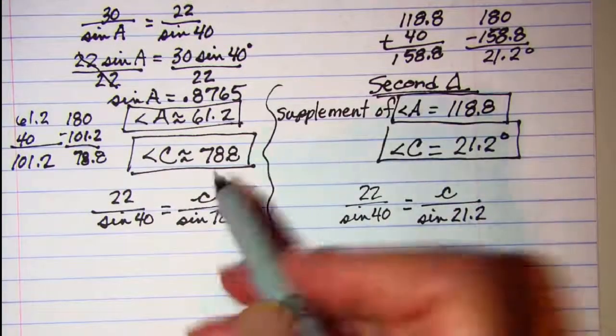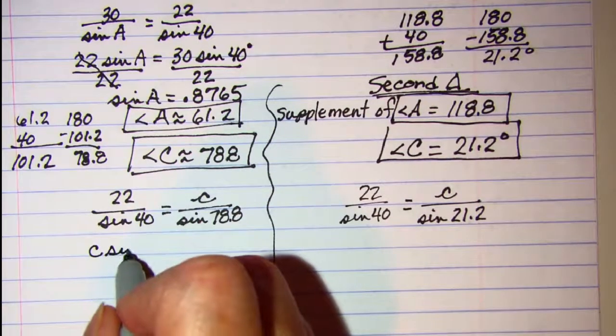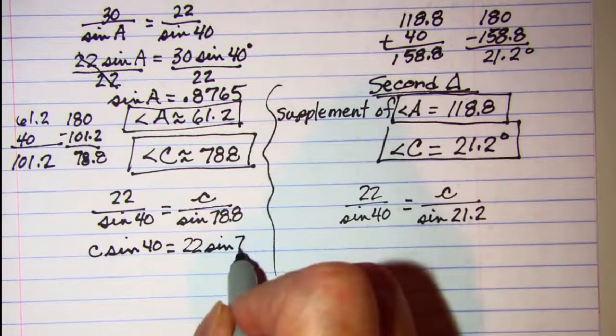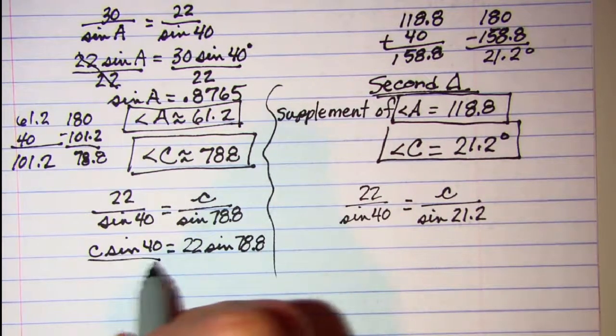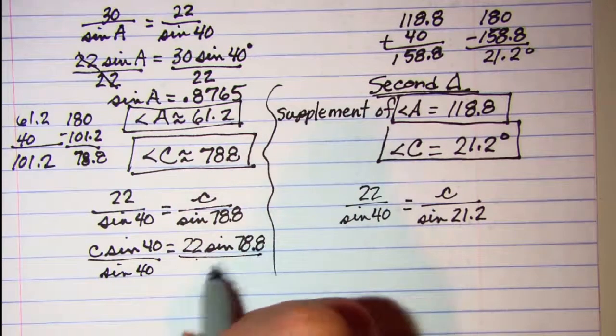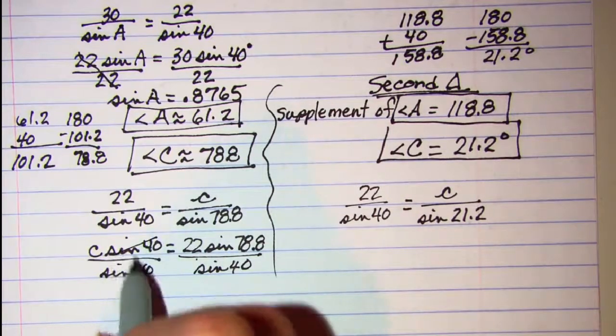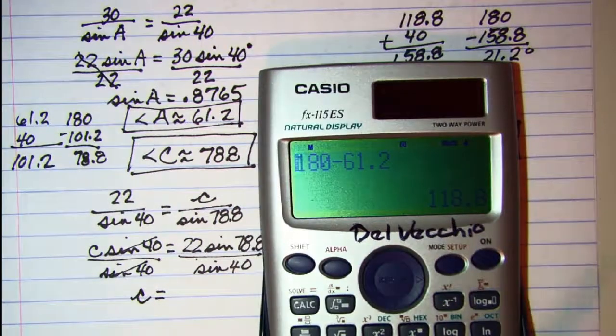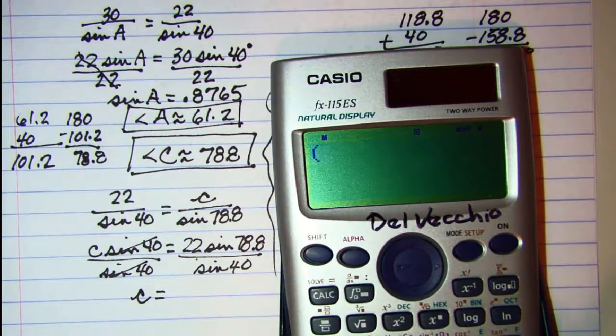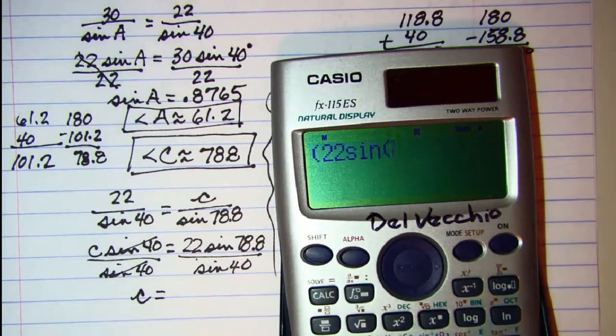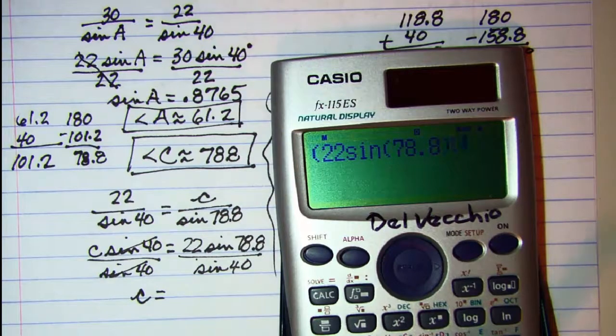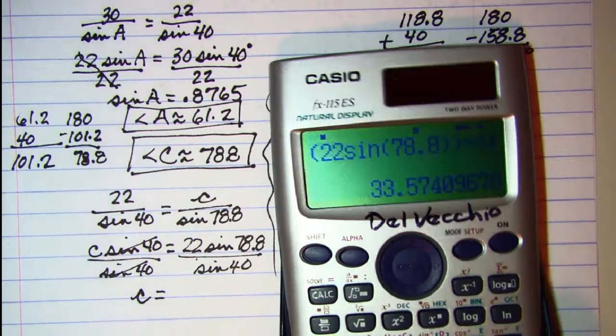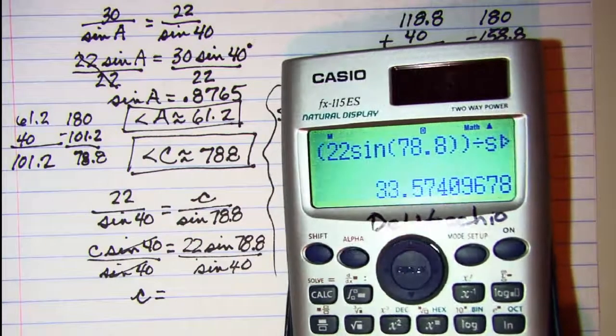So let's solve these. We have C sine of 40 equals 22 sine of 78.8. Divide both sides by the sine of 40. These cancel and we have side C. Open my numerator, 22 times the sine of 78.8, close my argument and close my numerator, divided by the sine of 40. So side C is 33.6.